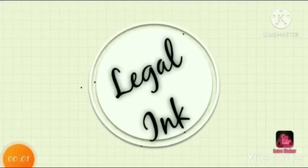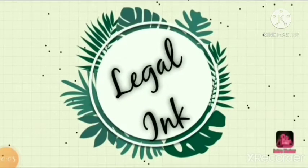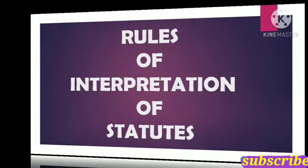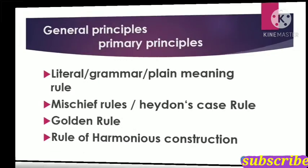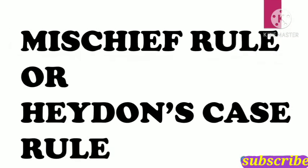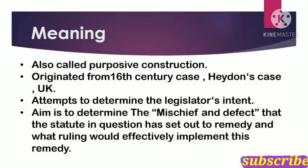Hi everyone, you are most welcome to my channel Eagle Inc. As we have seen in earlier videos, there are four main primary principles of interpretation: first is literal or plain meaning rule, second is mischief rule or Hayden's case rule, third is golden rule, fourth is harmonious construction. We covered the literal rule in earlier videos, and in this video we will cover the mischief rule.